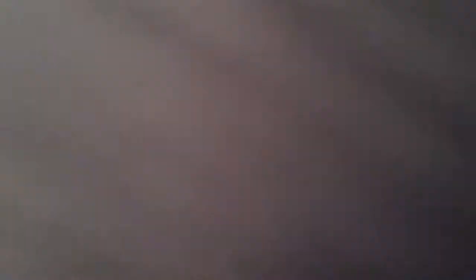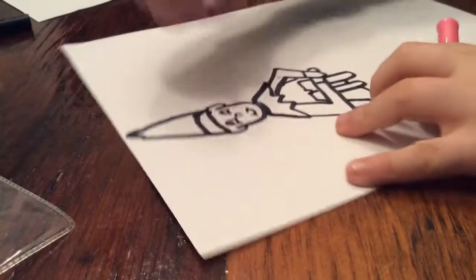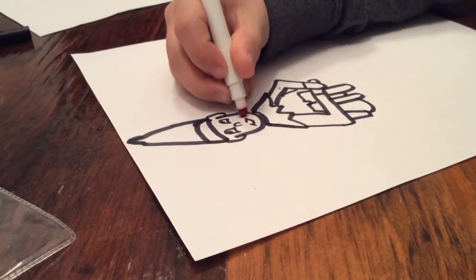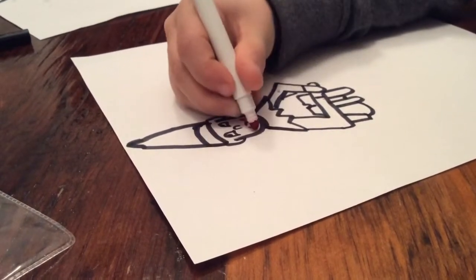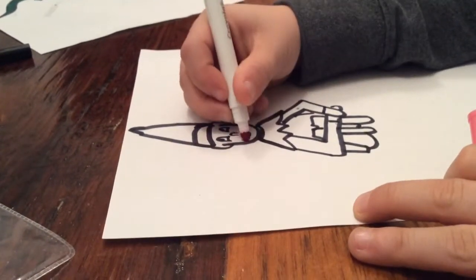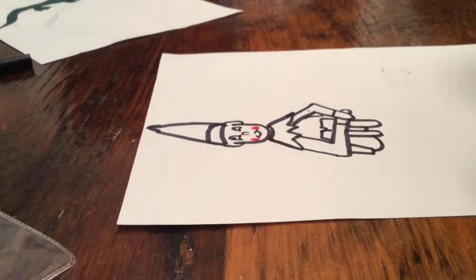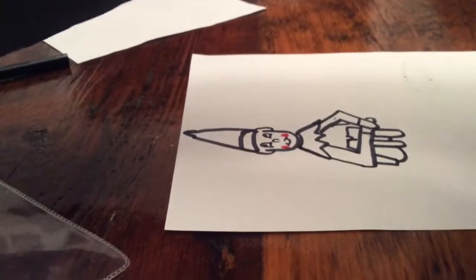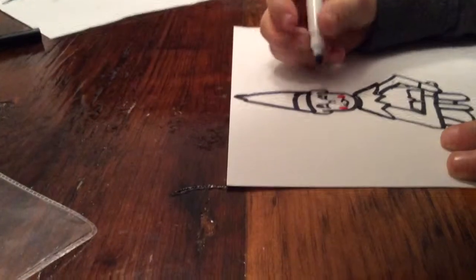So first you're going to start off with the cheeks, so like rosy cheeks, like no elf on the shelf would have. Like this, then you're going to need a brown like this, you're going to go around the eyes like that.